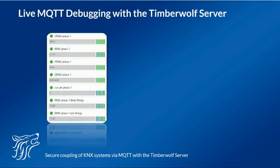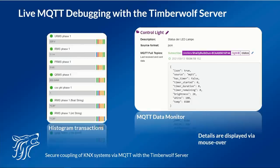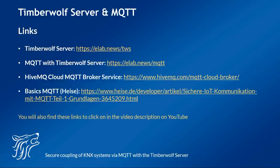Devices can become defective and even the best experts can make mistakes. In addition, data sheets of the devices involved are not always correct. The Timberwolf server provides displays and bus or data monitors for each of the supported protocols. For each transaction set up with an MQTT object, a histogram is displayed for trend analysis. To check the communication via the respective MQTT topic, a data monitor can be displayed with one click, which is updated live — allowing you to check the communication in real time. Details and recommendations for actions can be displayed simply by mouse-over, so you can find possible problems and errors in no time. More information can be found behind the links shown below in the description of this video on YouTube.